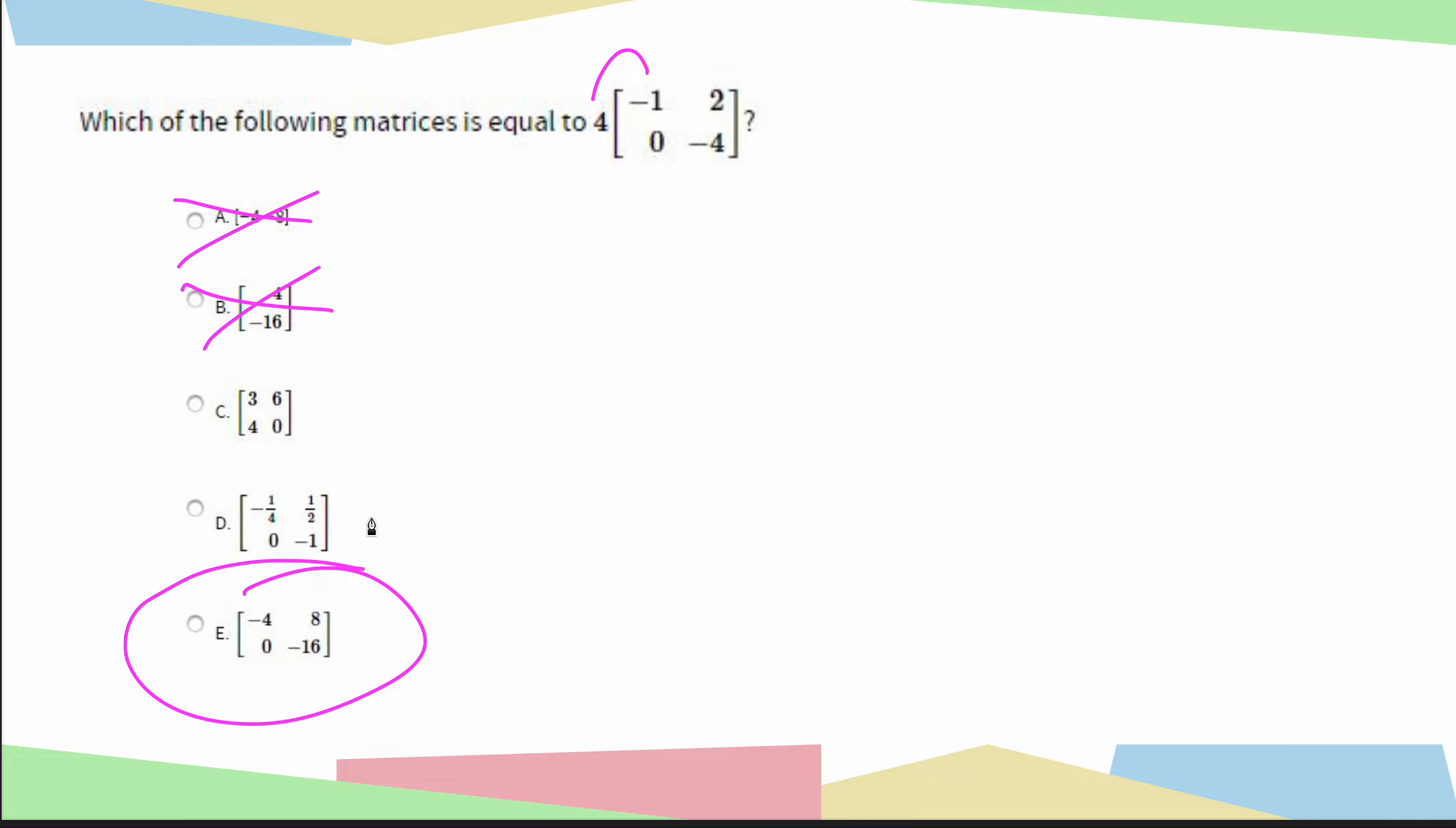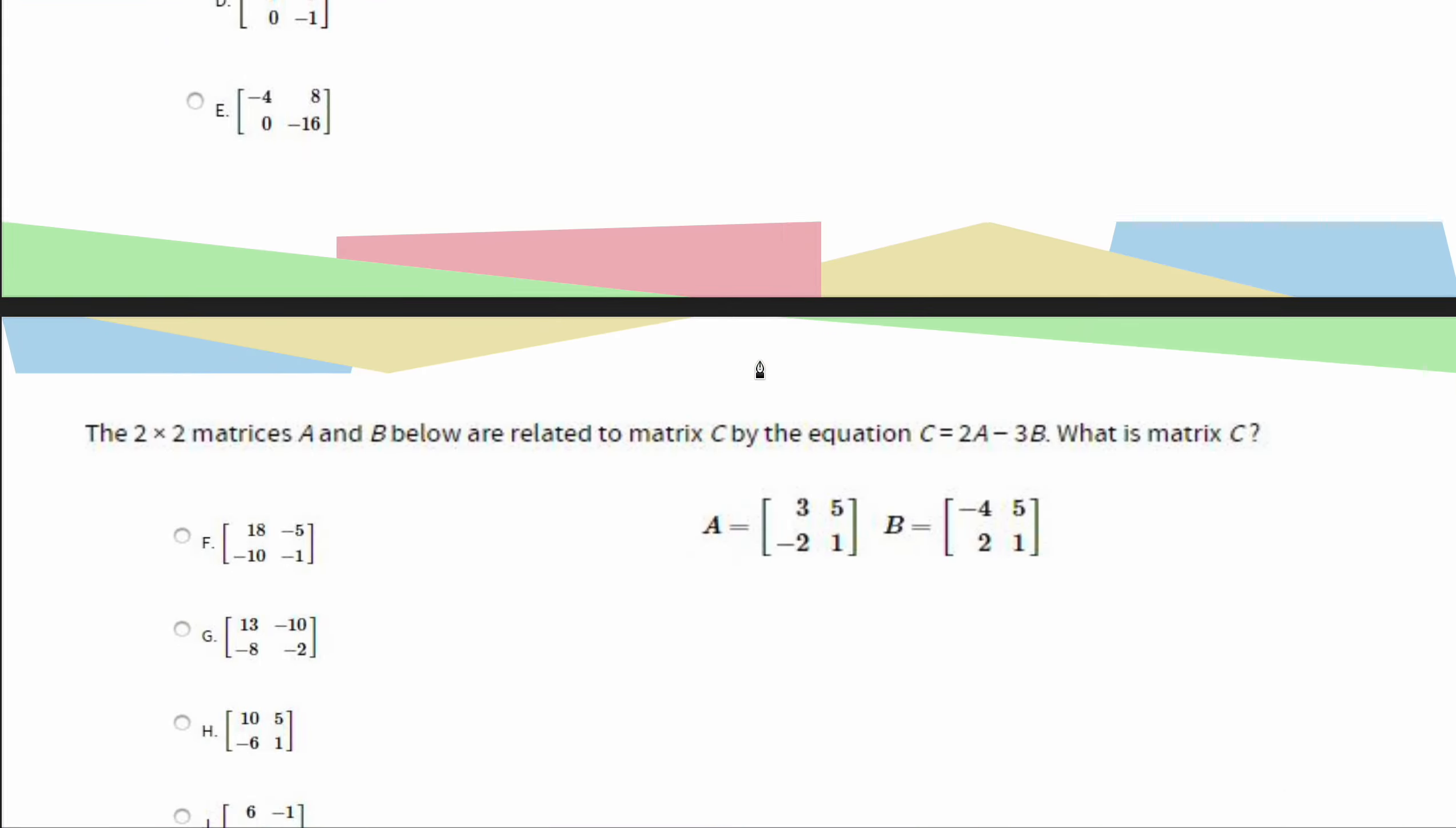For this one, it looks like they actually used division to try to trick you. So like negative 1 divided by 4 would give you this, or 2 divided by 4 would give you 1 half. Anyways, not necessarily relevant. Just remember, when you are doing this, you are multiplying the 4 in, and E is the correct answer. Moving on.